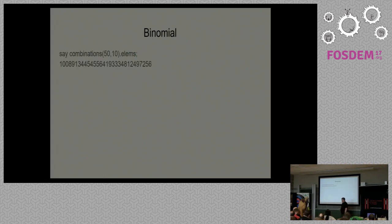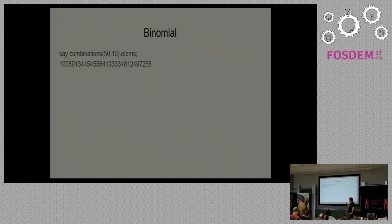Binomial is very common — we want to find the number of combinations. Taking 50 items, I want to choose combinations of 10 of those — how many do I have? I add .elems and I get this humongous number. Perl 6 is very clever and knows that you're just asking for the number of elements — you didn't want it to create a huge list with that many items. You just wanted the number of elements, so Perl 6 gives that to you.